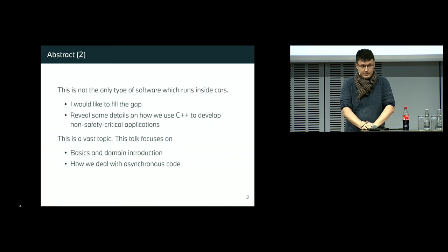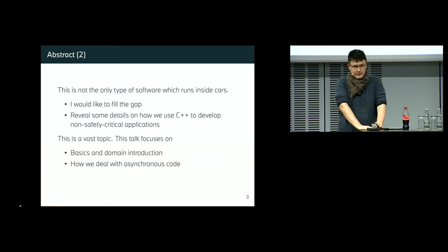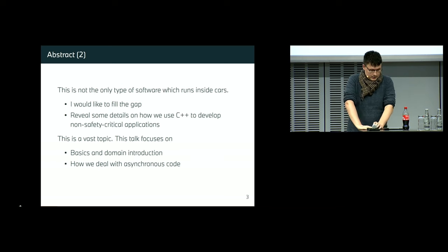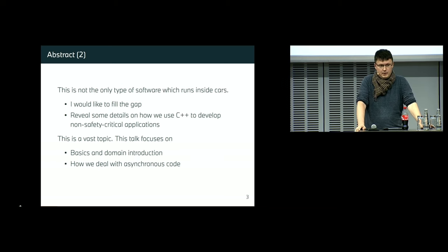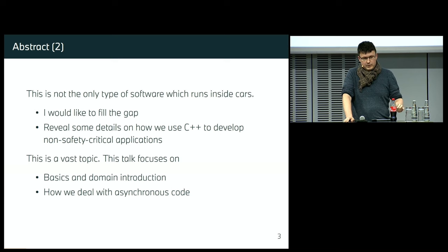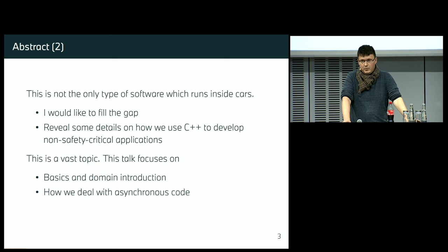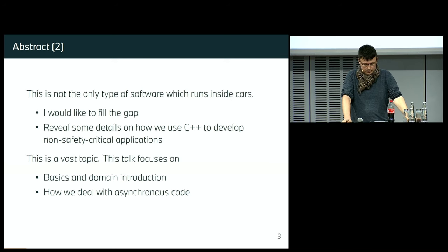But this is not the only thing which runs in a car — there is a lot more. By giving this talk, I would like to fill the gap and reveal some details about how we at BMW use C++ to develop so-called non-safety critical applications. This is a pretty vast topic and I cannot possibly cover it all today. I will focus only on one small piece of that. But before we go to the C++ part, I would like to do an introduction to automotive software in general.